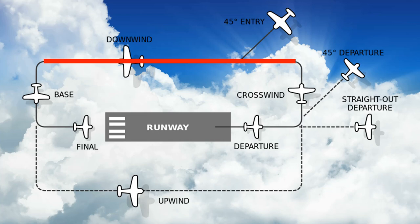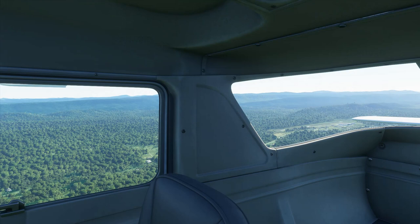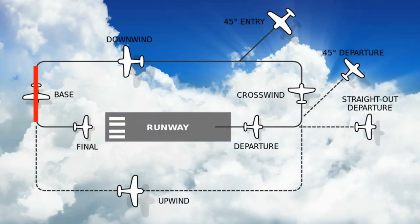We'll continue on downwind until just before we turn onto base. We'll keep a lookout and when the runway threshold is roughly 45 degrees from our present position we'll begin a left-hand 90-degree turn onto base — in this case onto a heading of 180. As we turn onto base we'll reduce power, allow the airspeed to come back, take a stage of flap once below the flap extension speed, and trim to maintain around 70 knots and a descent rate of around 400 feet per minute. We'll continue on base until we turn final — left 90 degrees onto final for runway 26 at Bers.